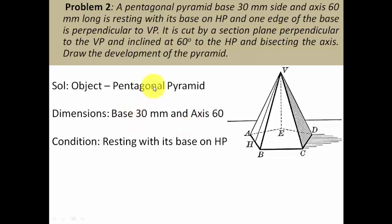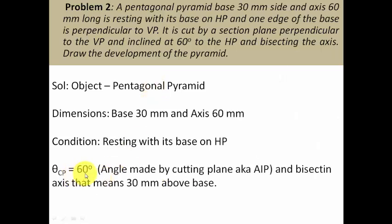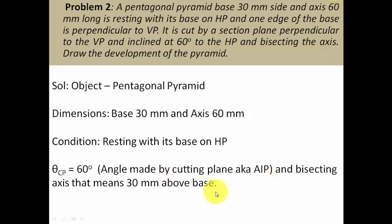The cutting plane angle theta CP is equal to 60 degrees — that is the angle made by the cutting plane, also called the Auxiliary Inclined Plane (AIP). An AIP is a plane which is perpendicular to the VP and at a certain angle with the horizontal plane. Bisecting the axis means it is 30mm above the base since the axis length is 60mm, so 30mm above and 30mm below the bisecting point.